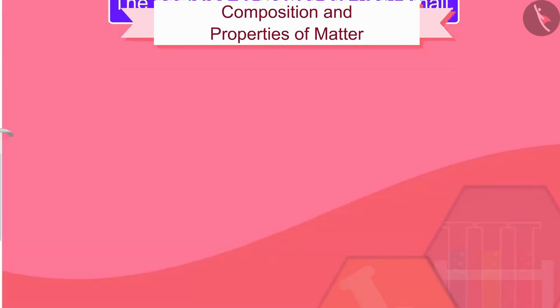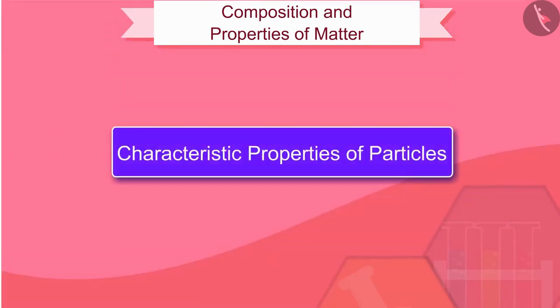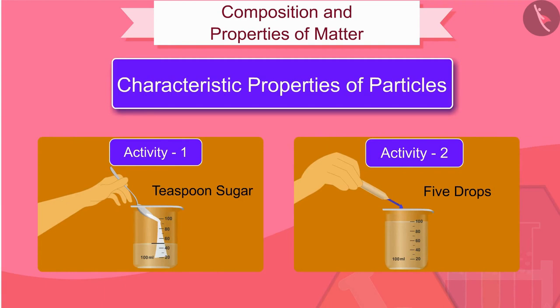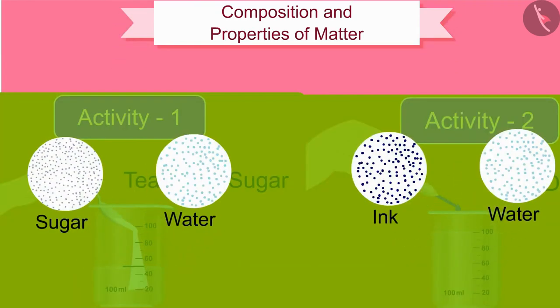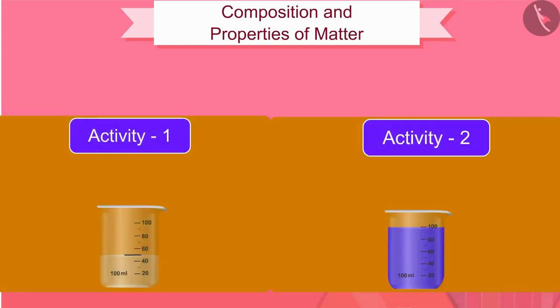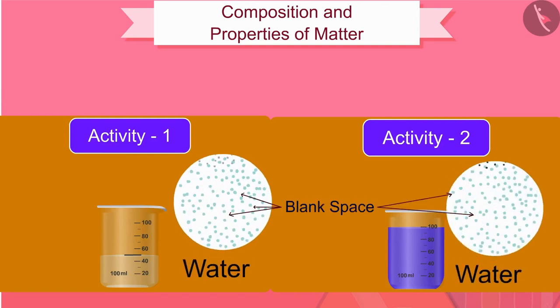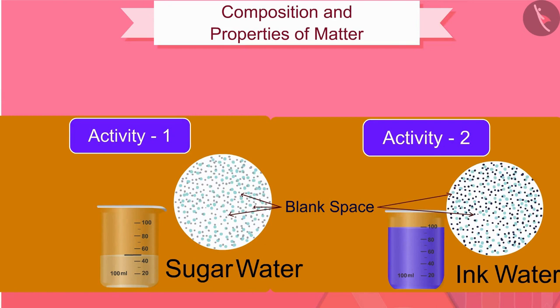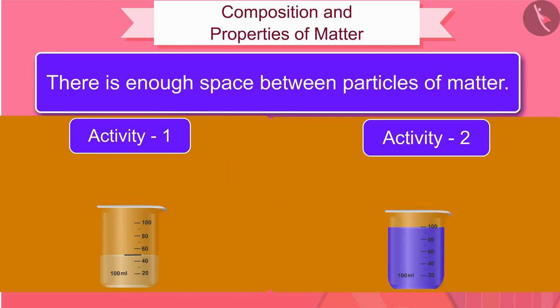Let us now learn about the characteristic properties of these particles of matter. In activities 1 and 2, we saw how the sugar and ink particles were evenly distributed in water. This is possible because particles of one matter are incorporated into the spaces of particles of another matter. It shows that there is enough space between particles of matter.